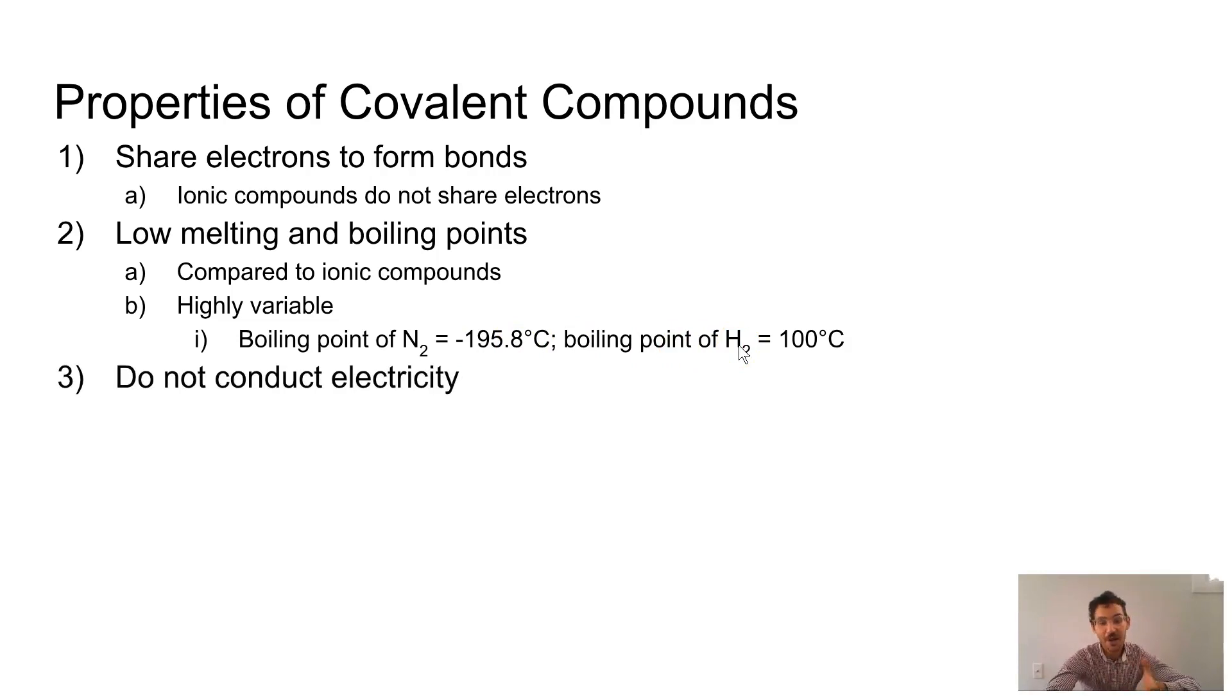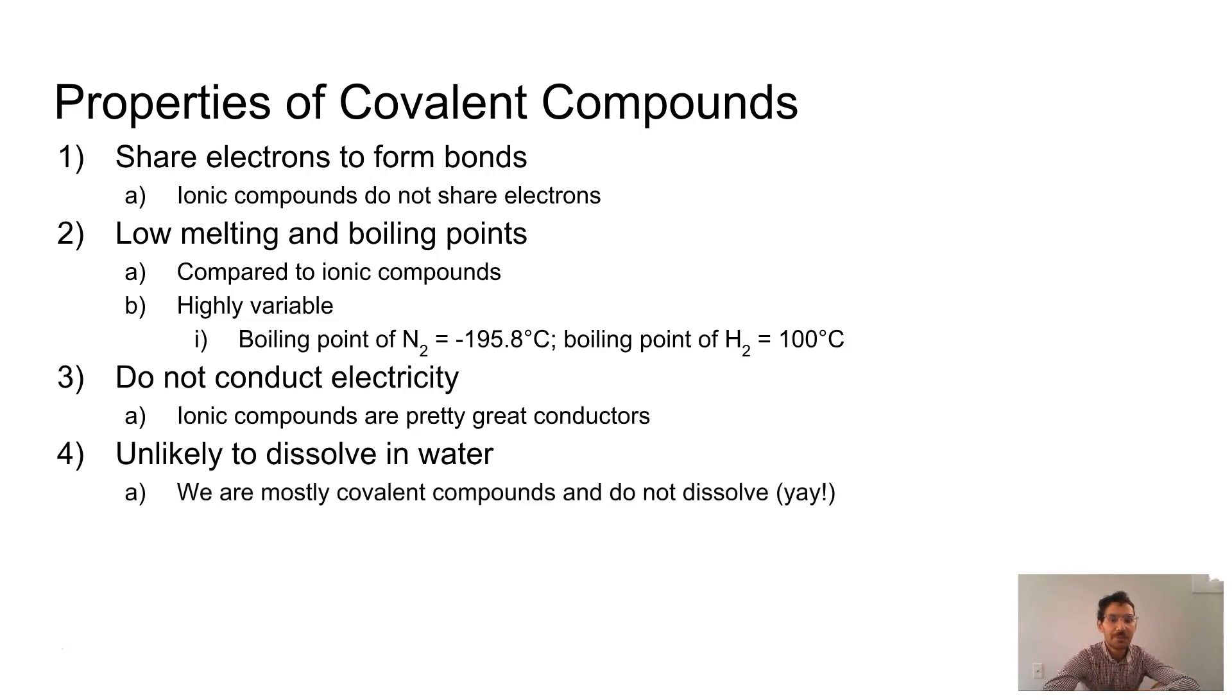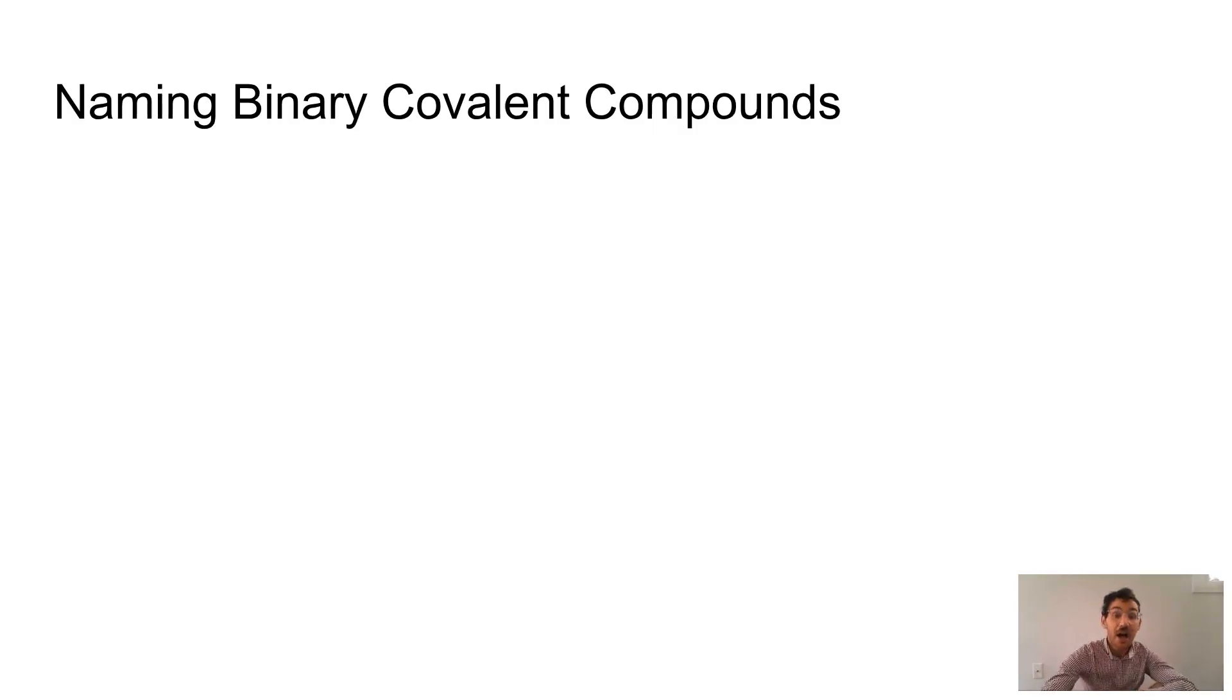So covalent compounds in general are not very good at conducting electricity. Ionic compounds are pretty darn great conductors, because they have charge and that charge can move around and help carry electricity. And covalent compounds are far less likely to dissolve in water, even though water is a covalent compound. And we're mostly covalent compounds. Unfortunately, our bodies do not dissolve in water. Many covalent compounds will dissolve in water, but they are less likely to dissolve than our ionic counterparts. And covalent compounds are generally much more flammable than ionic compounds. If you're able to light an ionic compound on fire, that's scary. But most covalent compounds will burn much more easily.